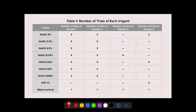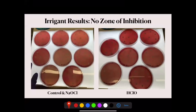Table one shows the number of trials performed for each irrigant tested at various concentrations. A total of 46 trials were performed using sodium hypochlorite, CPC, hypochlorous acid, and water as a control. However, in these trials, no zones of inhibition were shown. Therefore, the irrigants were not effective in inhibiting the bacteria from growing.